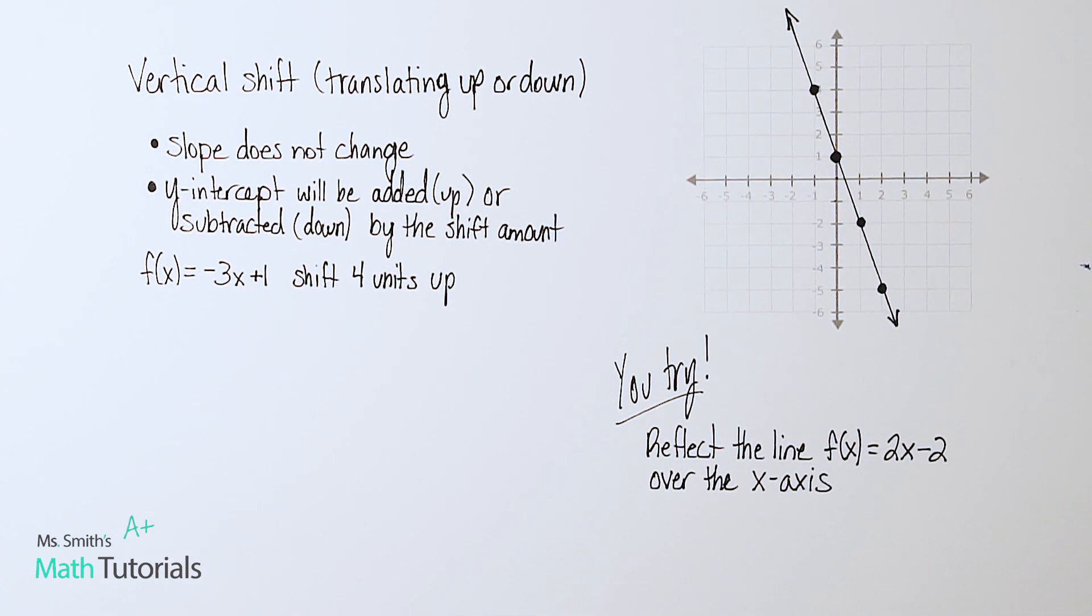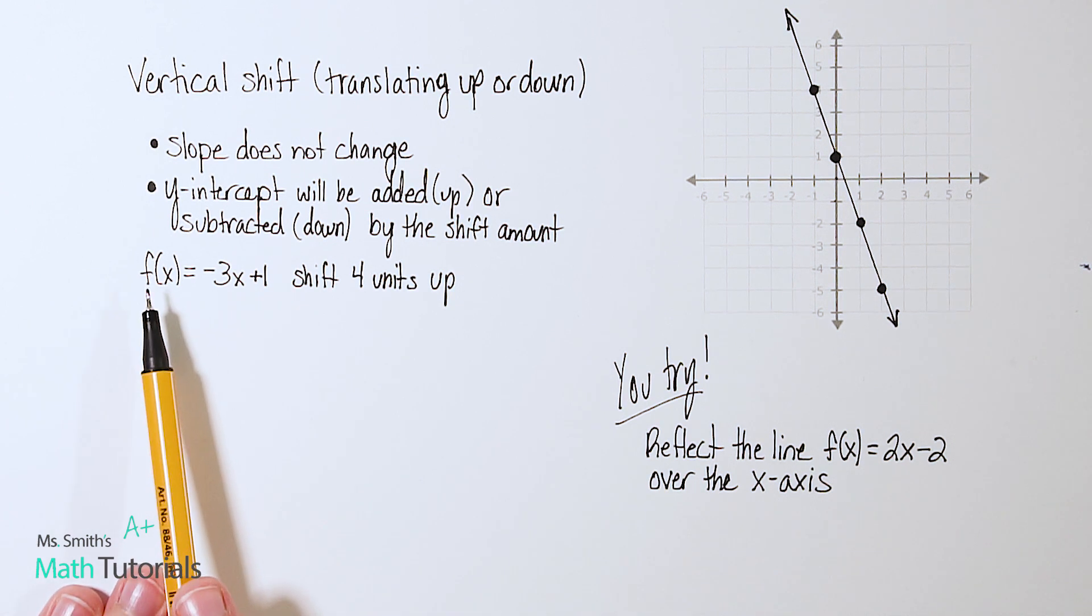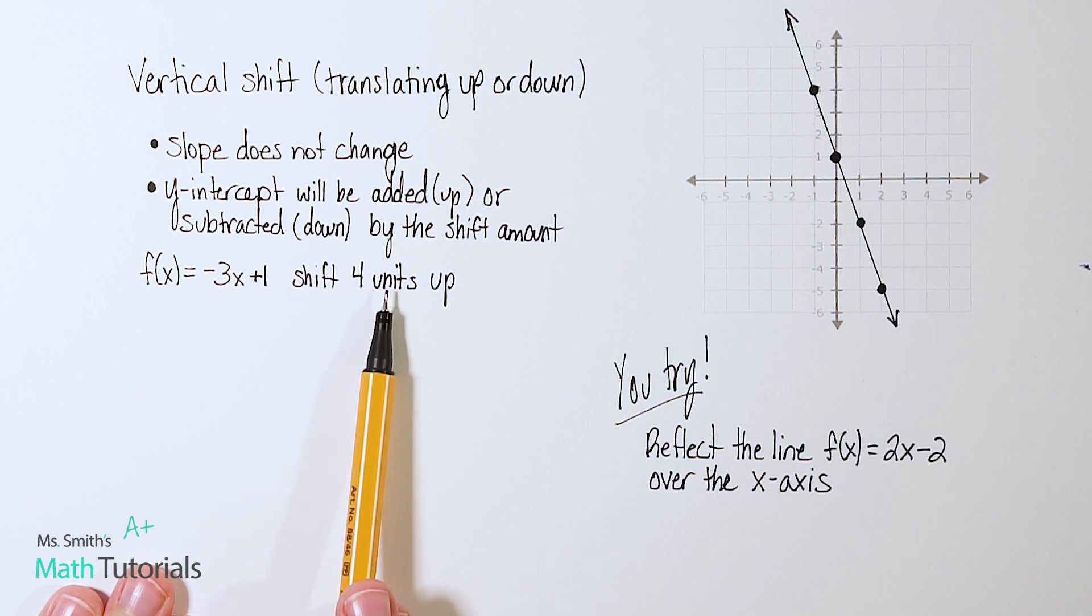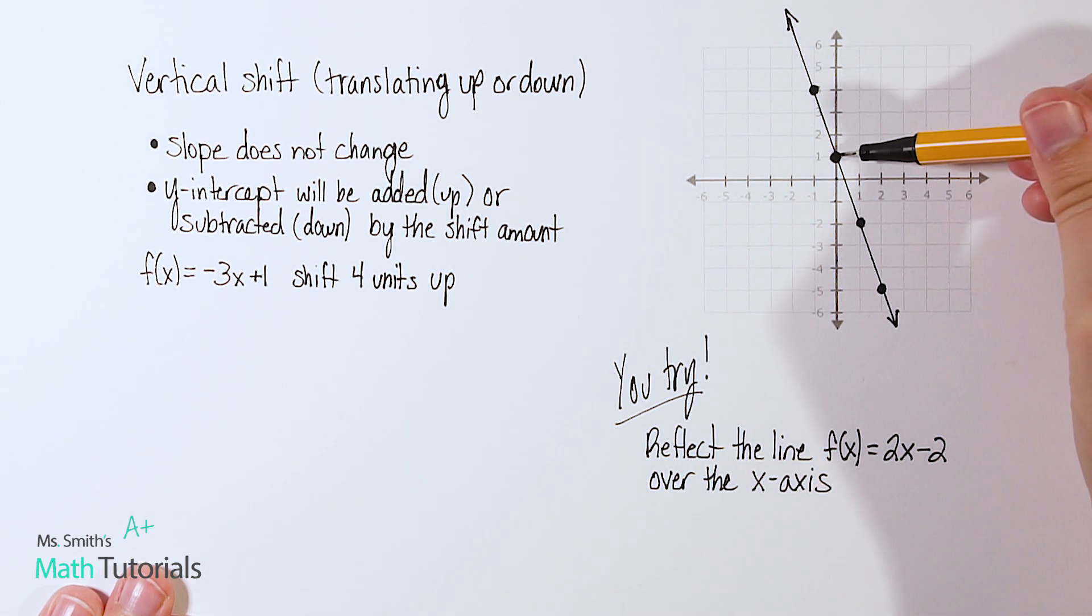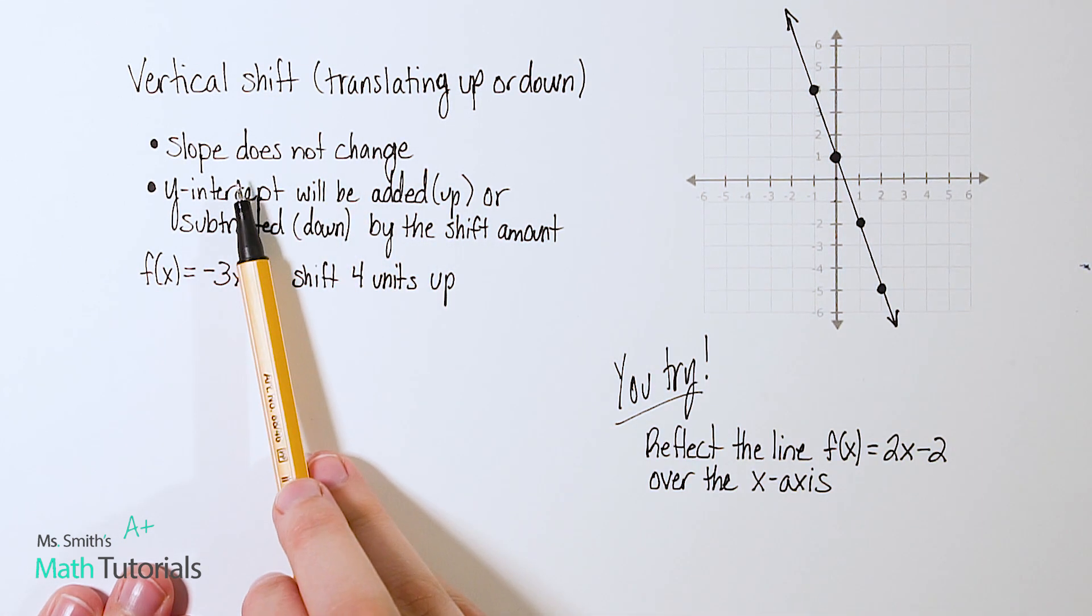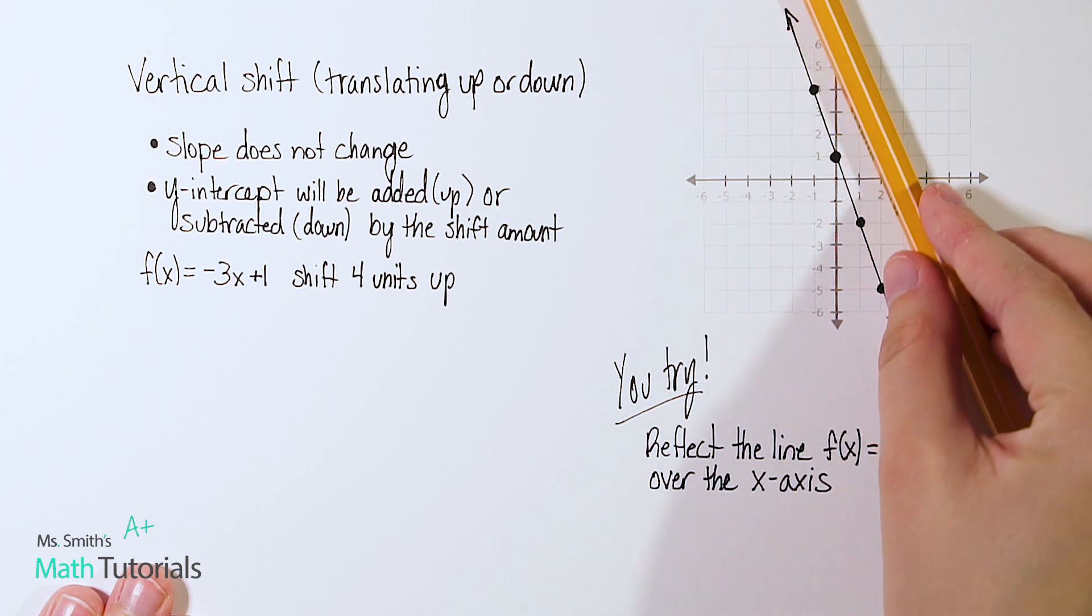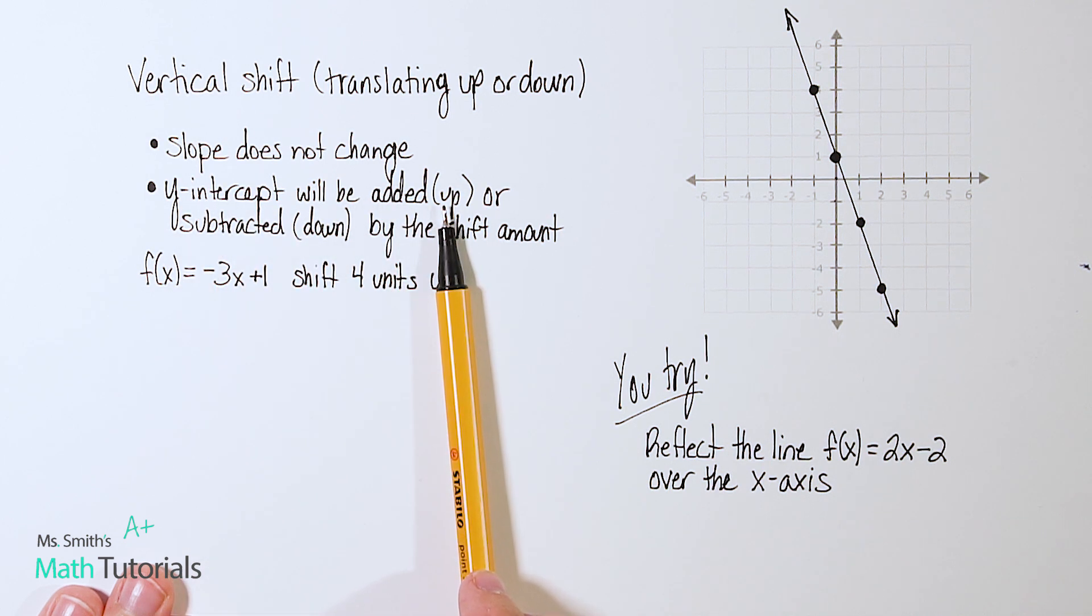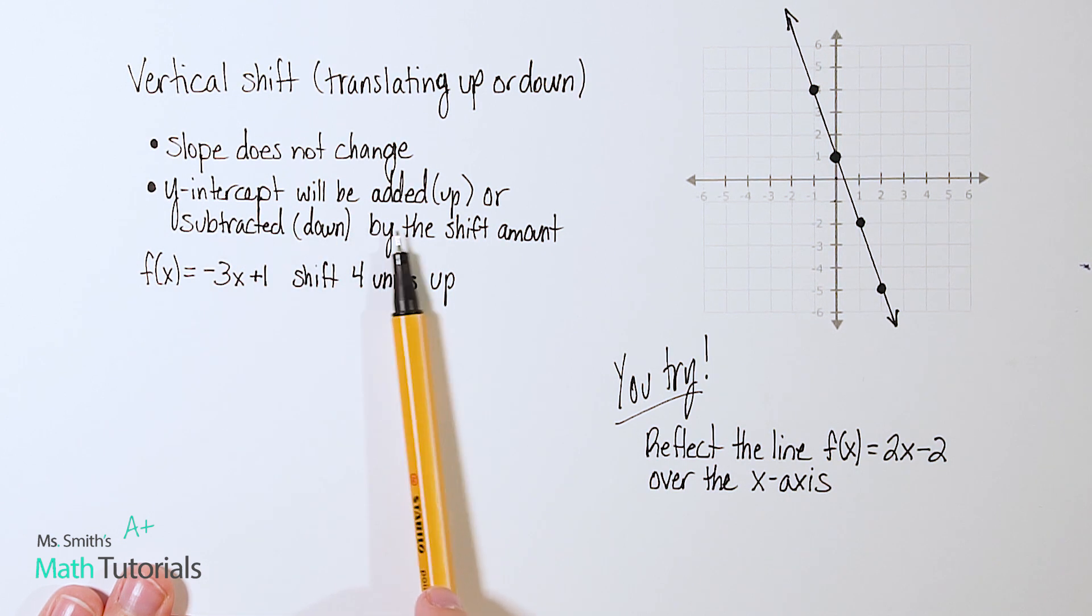The last type of transformation we're going to talk about in this video is a vertical shift. It's essentially that we are going to translate either up or down. We are not going to cover translating horizontally in this video. We're just going to talk about moving up or down. We call that a vertical shift. So let's think about this example that I've given. Here's an equation, which I've already graphed over here, and we want to shift it four units up. I want to literally take this line and shift it one, two, three, four units upwards and see what happens. So looking at my rules, I know that my slope is not going to change. It's a negative slope right now. It's going to stay a negative slope if I just shift it up. And the y-intercept will be added by moving up, if that is what we're doing, or subtracted by moving down by the shift amount.